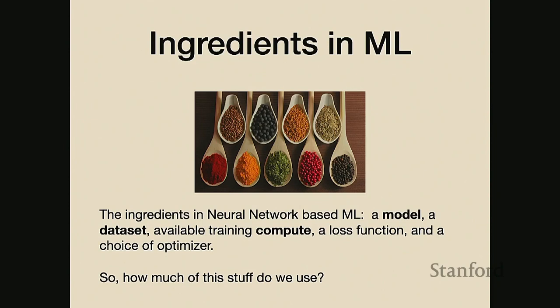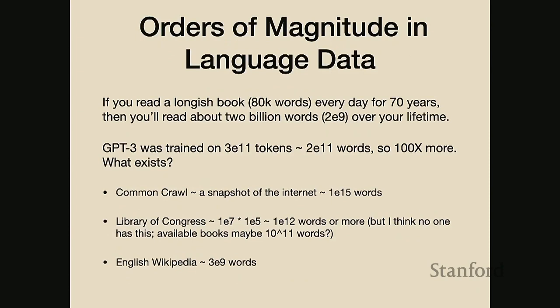But what about these other ingredients - the models that we use, the datasets that we use, and how much computation do we use? What are those order-of-magnitude figures?